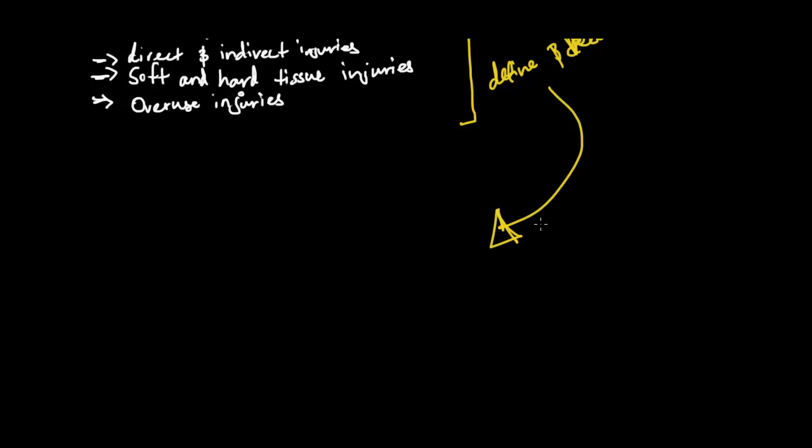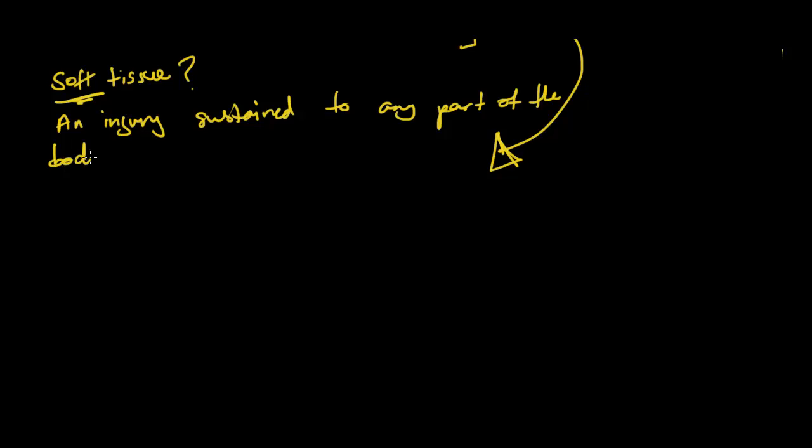Okay, so let's do this. Now, first off, what's a soft tissue injury? Well, if you think about it just from the name, you can actually already figure it out. So a soft tissue injury, as it implies soft, it's an injury sustained to any part of the body, such as skin, ligaments, muscles or tendons, excluding the bones and teeth.